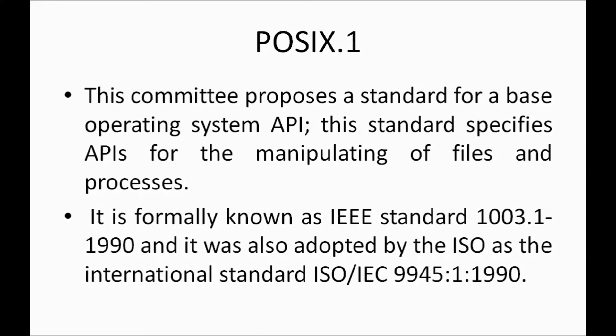These subgroup standards are related to different features. The POSIX.1 committee proposes a standard for a base operating system API. POSIX.1 mainly specifies APIs for manipulating files and processes — for example, to open a file, close a file, or delete a file. Functions like fopen and fclose are developed under POSIX.1. Everyone should use these APIs to achieve portability.